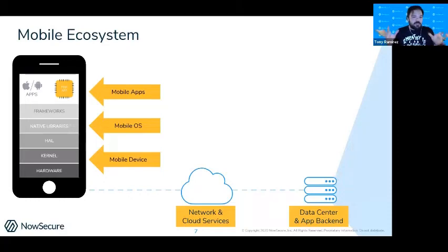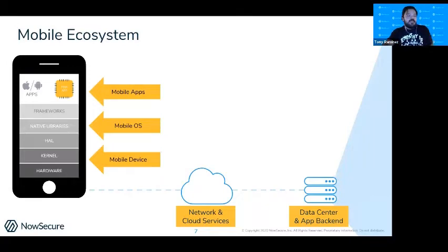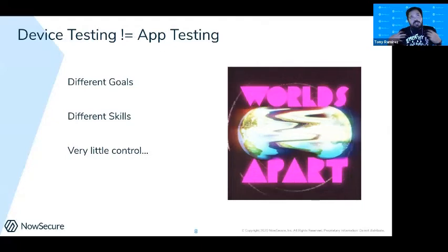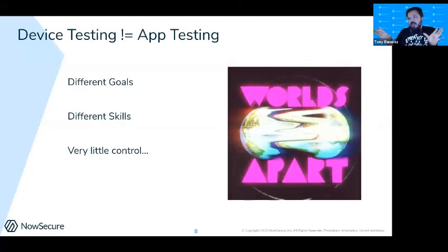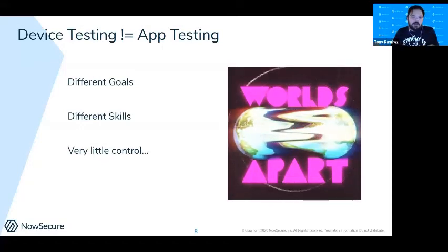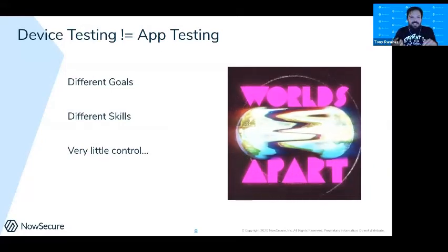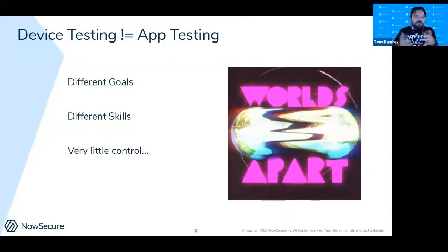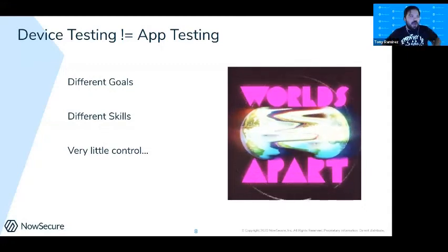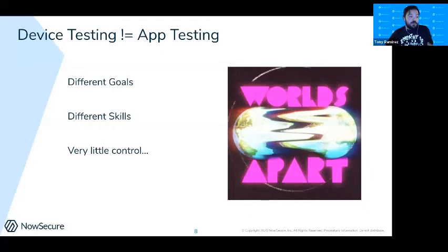When we look at the mobile ecosystem, it's easy to think it's just the mobile app, OS, device, network, and backend. But device security and app security are very different things — there are different skills and different goals. In app security, you have a very different level of control over what your users do and what those devices do.